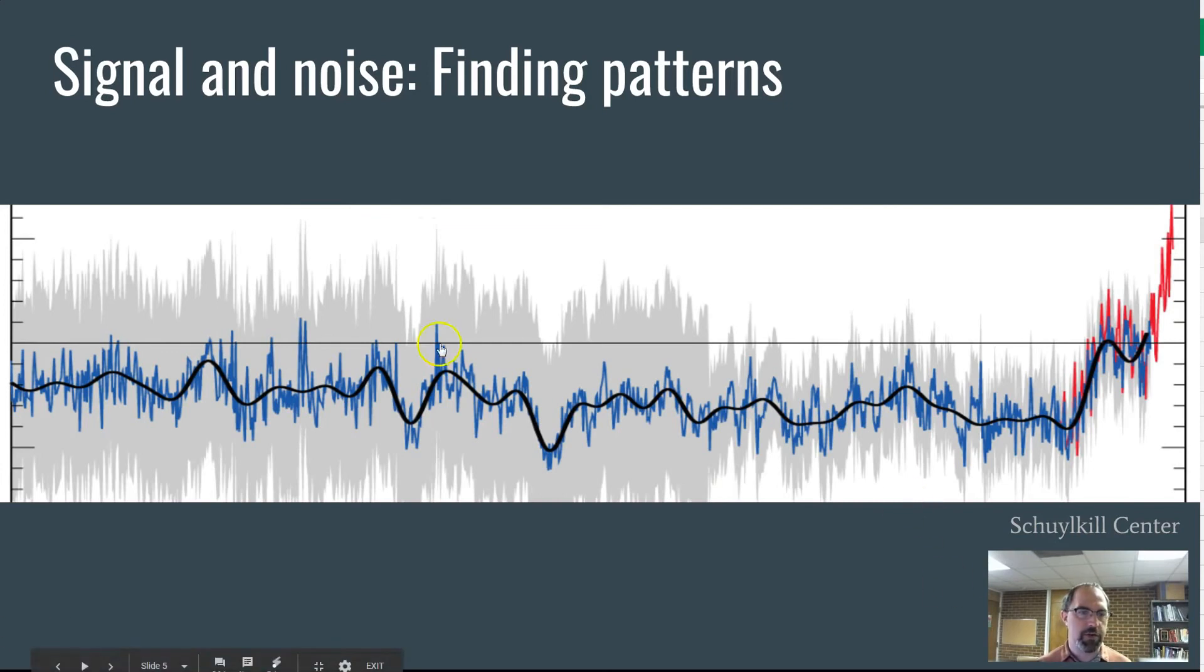The graph you're looking at here is of reconstructed temperature records over the last three or four thousand years. It's famously called the hockey stick graph because it buzzes along and there's some randomness here, but it's kind of flat more or less until the last hundred, hundred and fifty years when it shoots up. That's the signal.